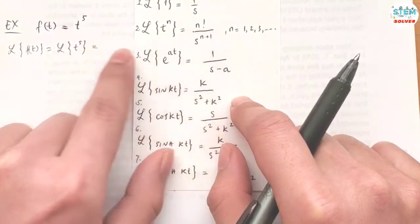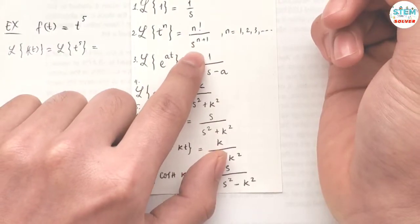So we have t to the fifth, so the n is 5, then we have 5 factorial over s to the sixth.